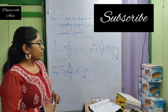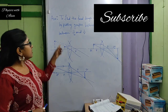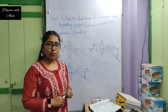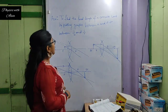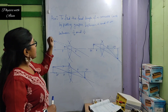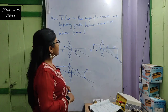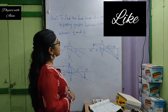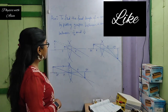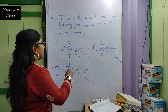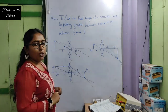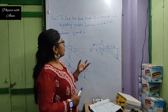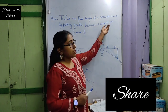Hello everyone, today we will discuss this practical. First, read the aim: the aim of the practical is to find the focal length of a convex lens by plotting graphs between u and v, and between 1/u and 1/v. We will discuss what u and v are.